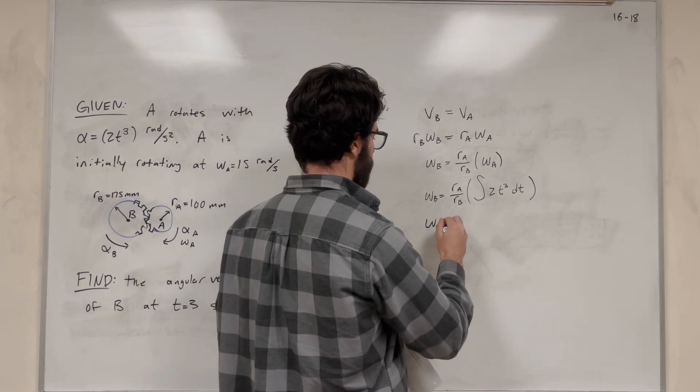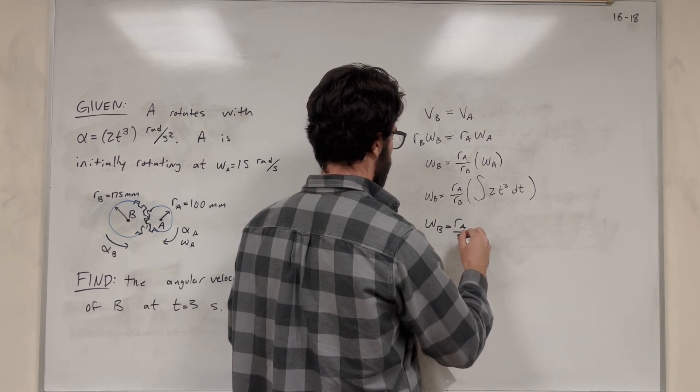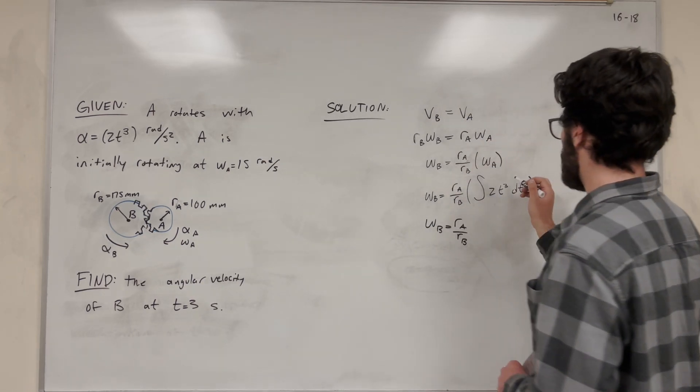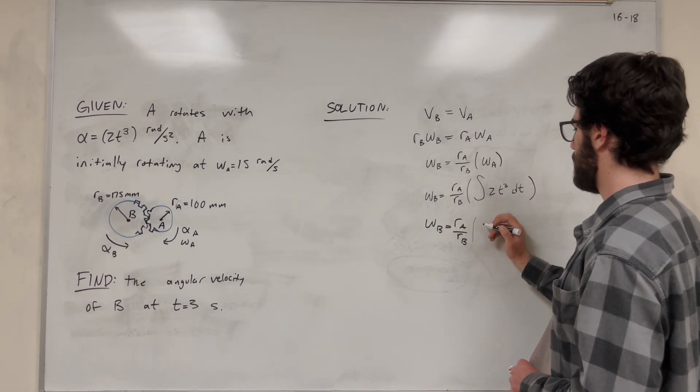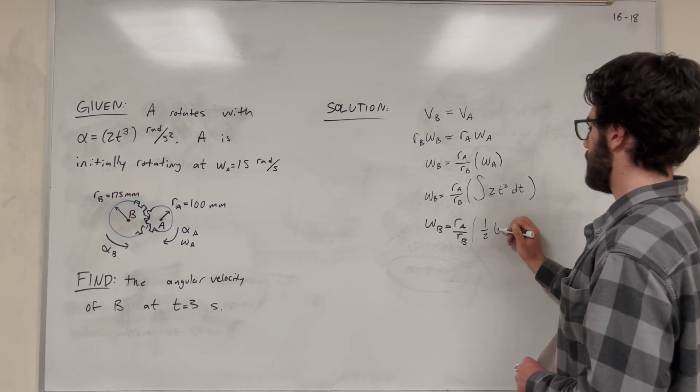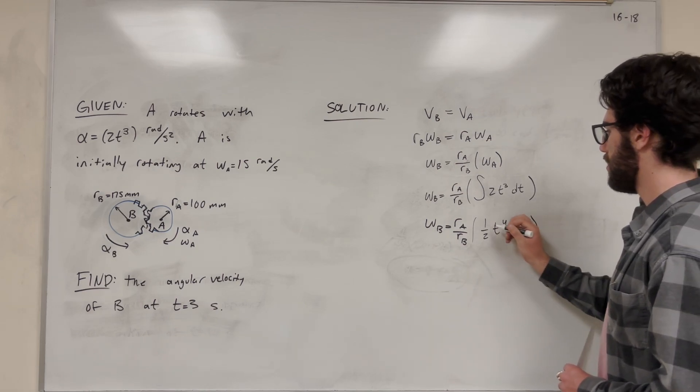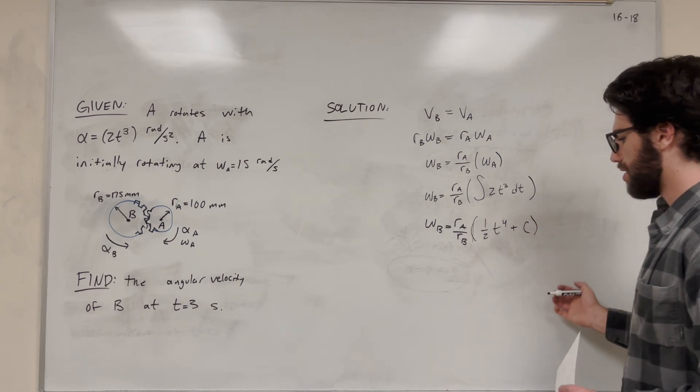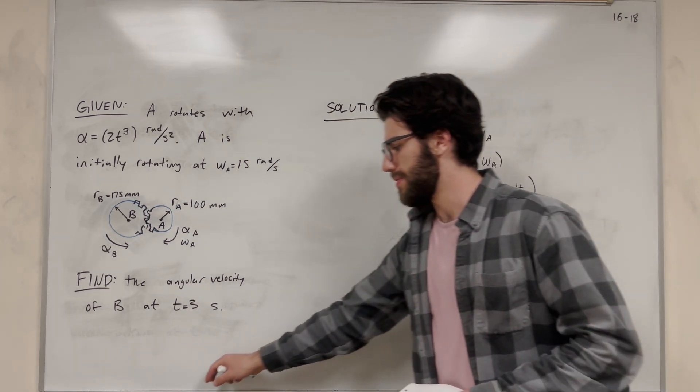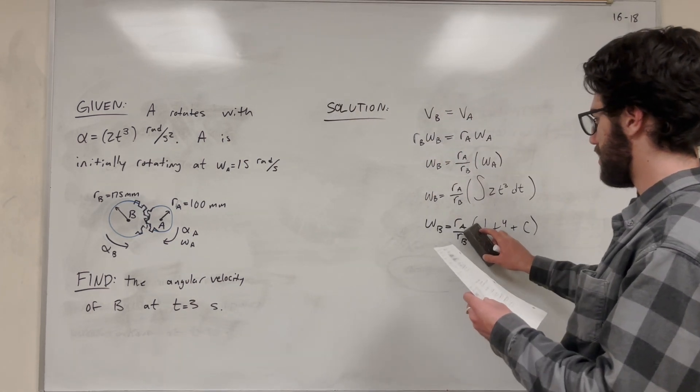Okay, so again, radius of A over radius of B. This integral, that's going to come down, it's going to become 1/2 t⁴. And then we have to add our constant. And so what is this constant? Well, this constant is our initial angular velocity.